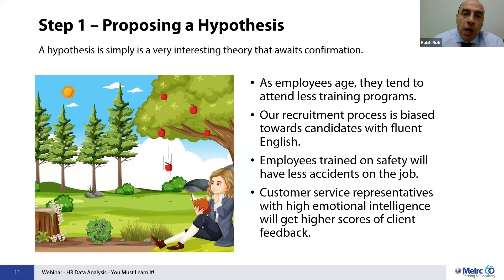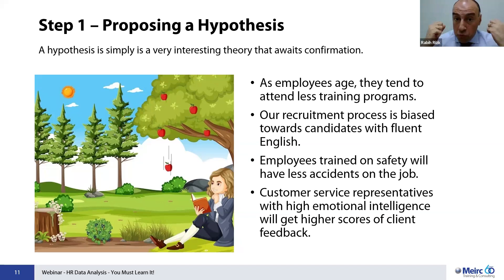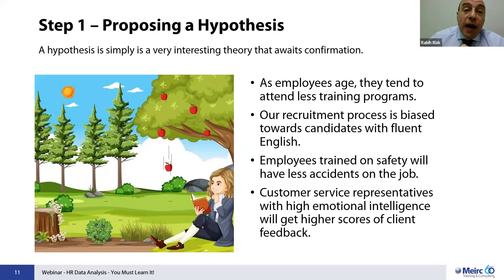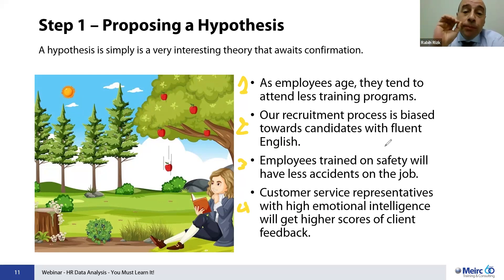While we do our day-to-day job, we come up with interesting theories. If we can confirm those theories, they become solid laws based on which we can understand and resolve problems. I'd like to share four different hypotheses and ask you which one you truly believe is true — just choose one. Number one: as employees age, they tend to attend fewer training programs. Number two: our recruitment process is biased toward candidates with fluent English.